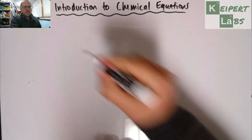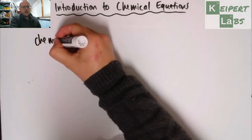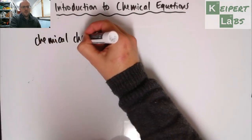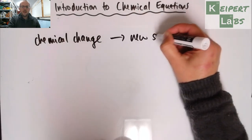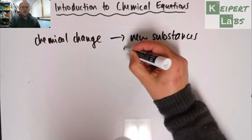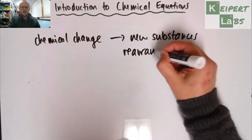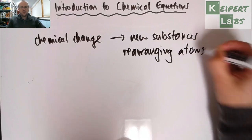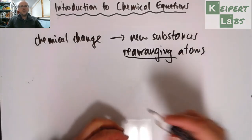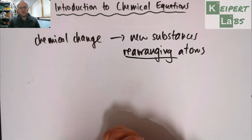That is the language and the way that chemists represent chemical change on paper. So we've talked about this idea that chemical change involves the formation of new substances and that the way that that happens is by rearranging atoms. This is how we can distinguish chemical and physical change. So we're rearranging atoms into new combinations to make new substances.